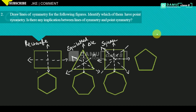All lines need to join at the center. This is a pentagon. Pentagon means five sides. So it will definitely have five lines of symmetry.